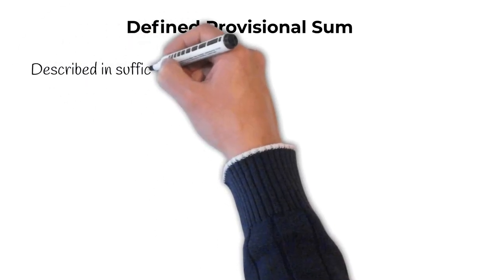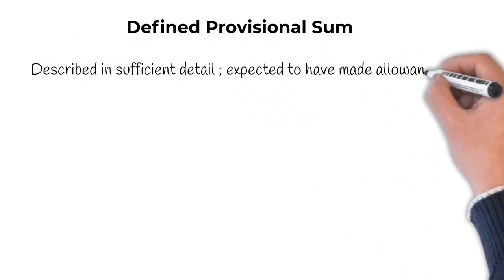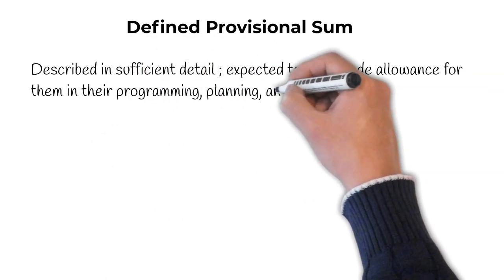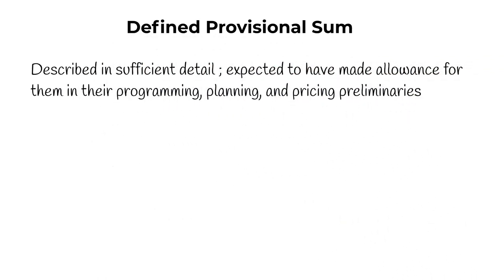Defined provisional sums are those that have been described in sufficient detail that the contractor is expected to make an allowance for them in their programming, planning, pricing and preliminaries. The work may not be completely designed, but the following information may be known.